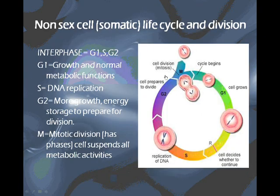We're going to start today with talking about non-sex cells, also called somatic cells. These are all of the cells that your body is composed of — your skin, muscles, your blood cells, and your bone cells are all somatic cells. The only types of cells that are not somatic are sex cells, gametes, which are egg and sperm. Any other cell is considered somatic.